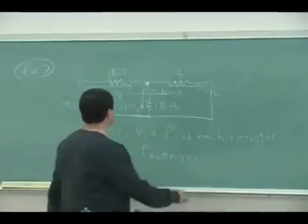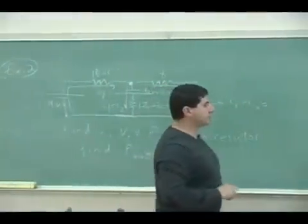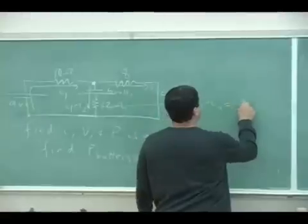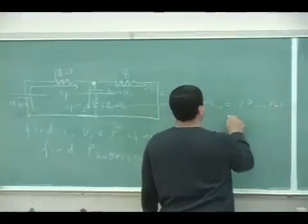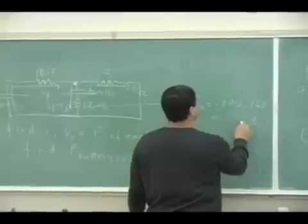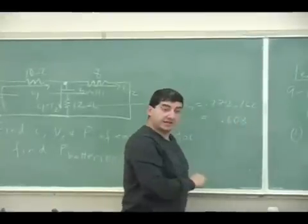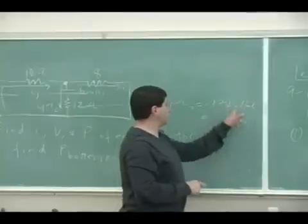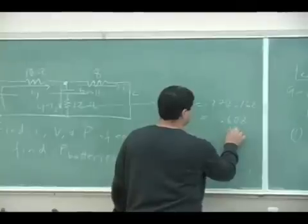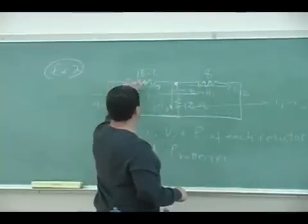Now, how about the middle current? What's the middle current going to be here? I1 minus I2. It's gonna be 0.77 minus 0.16, it's gonna be 0.608, but it's gonna be positive, right? This one is bigger than that, so that means it's still going down.